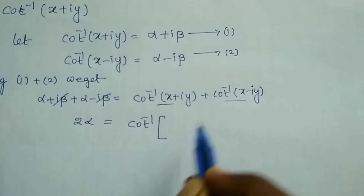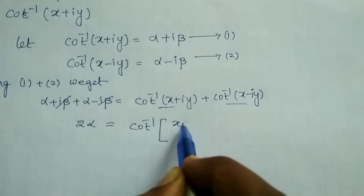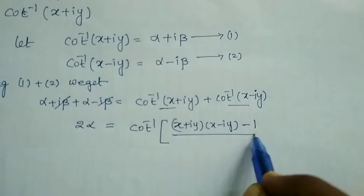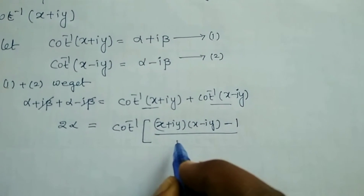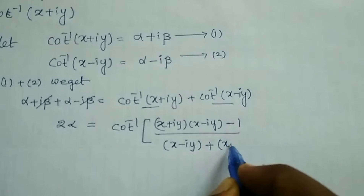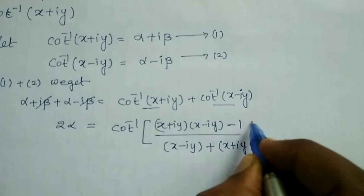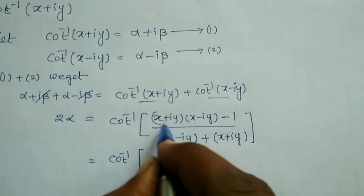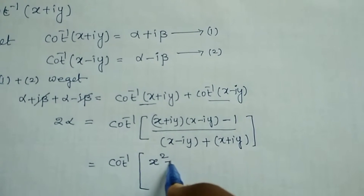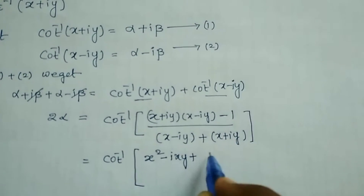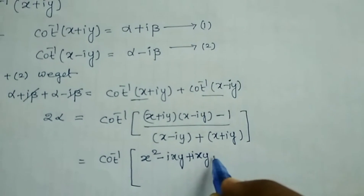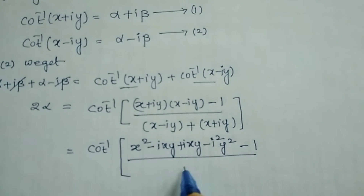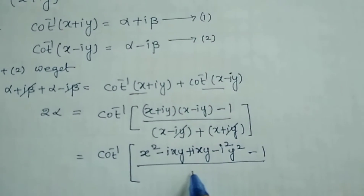The formula for cot inverse x plus cot inverse y gives cot inverse of: x plus i y times x minus i y minus 1, divided by x minus i y plus x plus i y. Expanding: x squared minus i x y plus i x y minus i squared y squared, and the denominator simplifies to 2x.